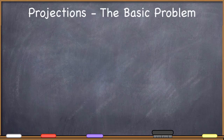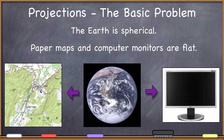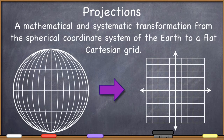Hello everyone and welcome back to our discussion of projections. In the last video lecture we were talking about a fundamental problem in geographic information systems, which is that the earth is round, spherical, a three-dimensional object. But most of the time we view geographic information on a two-dimensional surface — a hard copy map, computer monitor, or projection screen. So we have to convert our three-dimensional spherical coordinates to something flat through a projection, which is a mathematical and systematic transformation from the spherical coordinate system to a flat Cartesian grid.